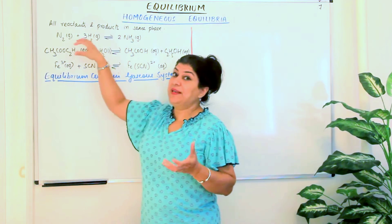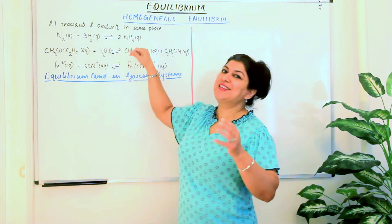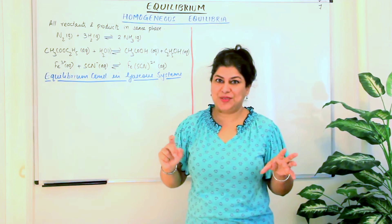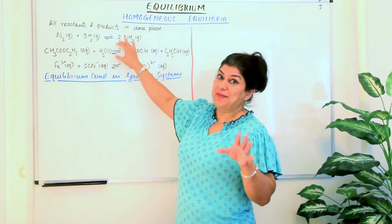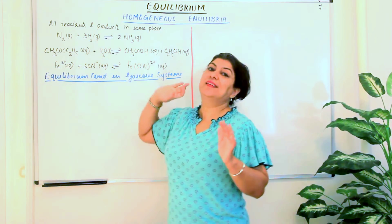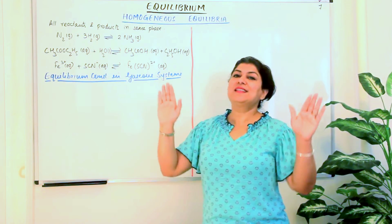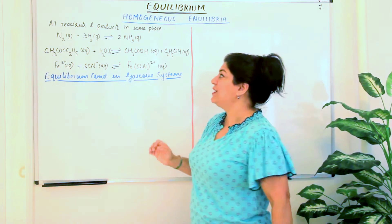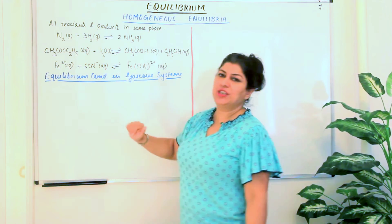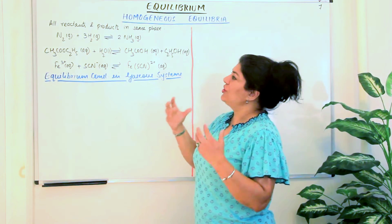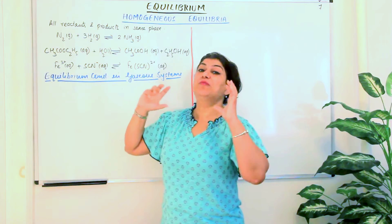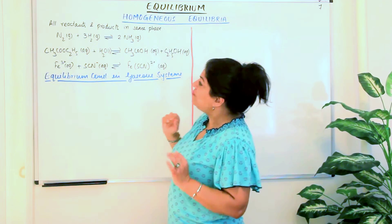Preferably, that physical state should be gaseous or liquid, because in the case of solids you may be able to tell which one is which — though not always. In the gaseous and liquid forms, you get that perfect blend. Examples of homogeneous equilibria are those reactions in which the reactants and the products are in the same physical state or the same phase.